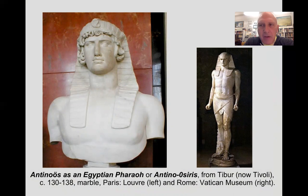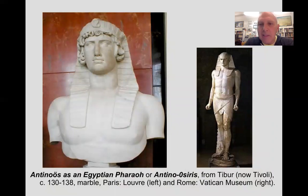Antinous died by drowning. It was on a trip when he and the court were in Egypt, traveling along the Nile, that Antinous drowned. One of the interesting things is that he drowned on the feast day of Osiris.